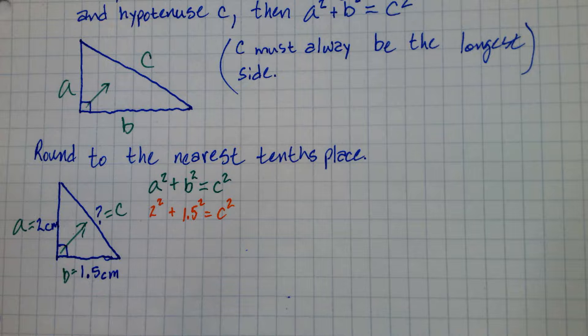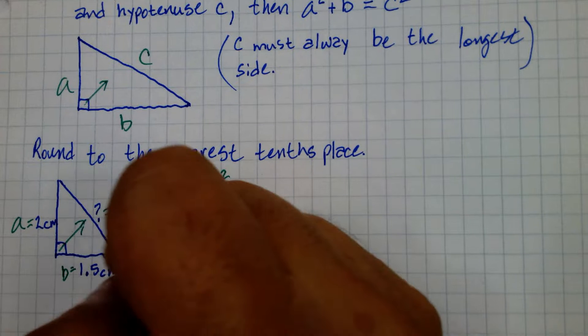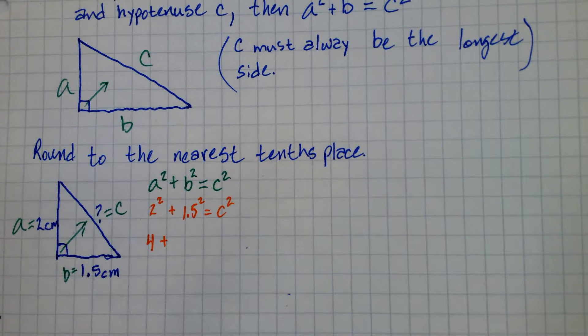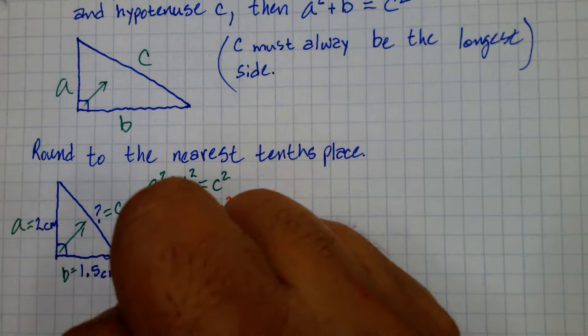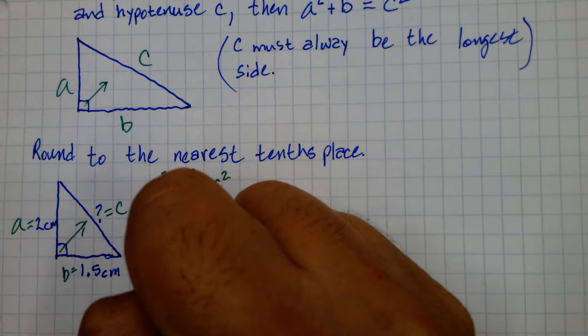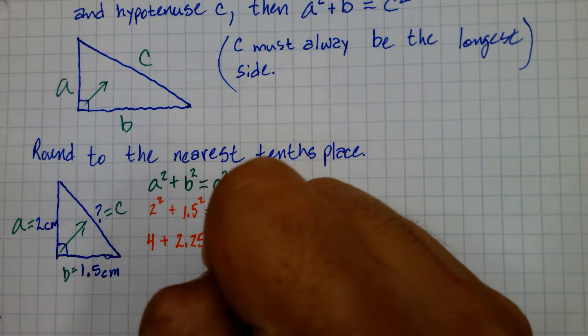And let's simplify that. So 2 squared is 4. How about 1.5 squared? 2.25 equals C squared.